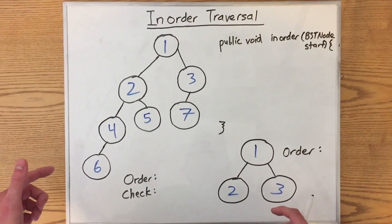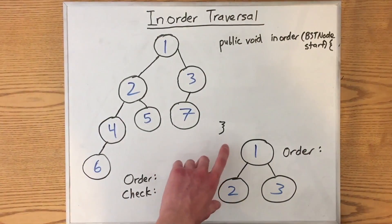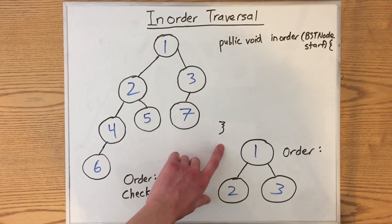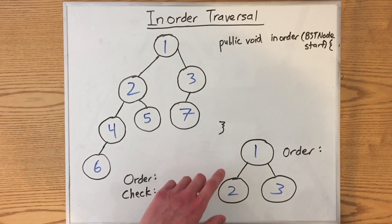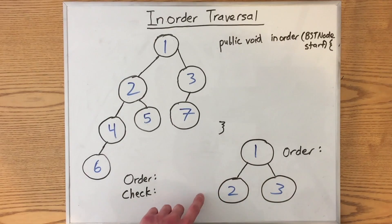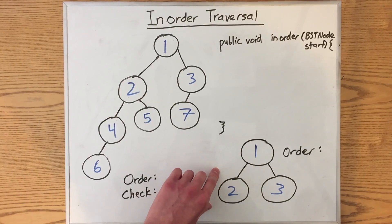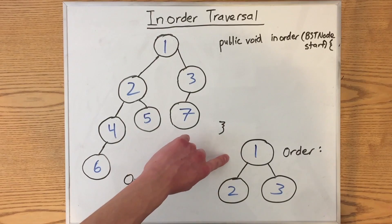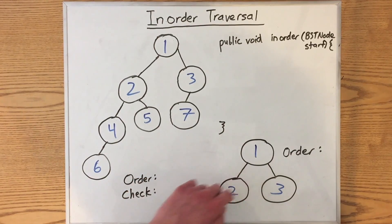Alright folks, now jumping into in-order. We're going to use what we learned from pre-order to make this a little faster. How in-order works is that first, we recursively traverse the left subtree. Then we print out the value of the root. Finally, we recursively traverse the right subtree.